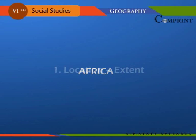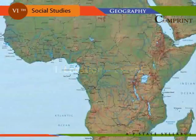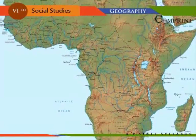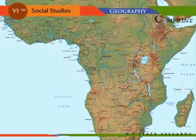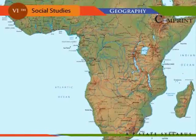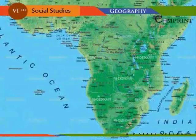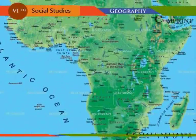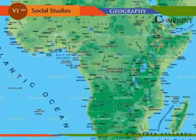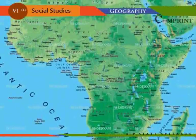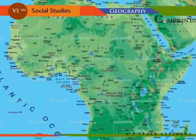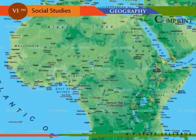Africa is the second largest continent in the world with an area of 30.3 million square kilometers. It occupies one-fifth of the land area of the Earth. There are about 53 countries with few openings along the smooth coastline.